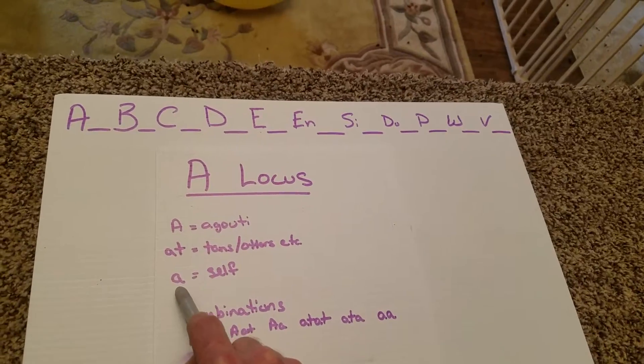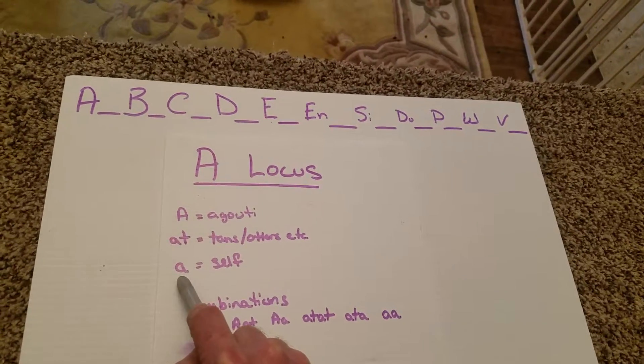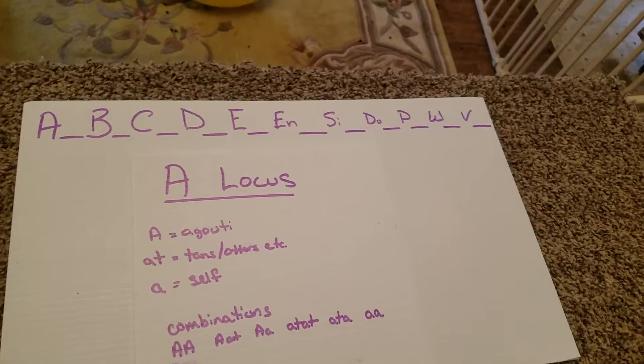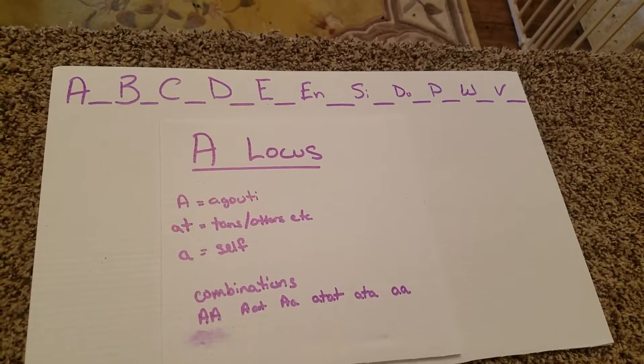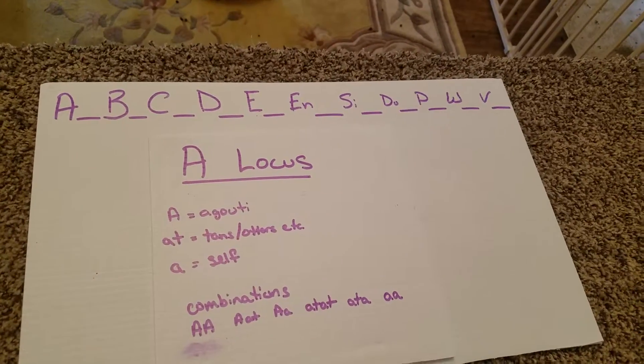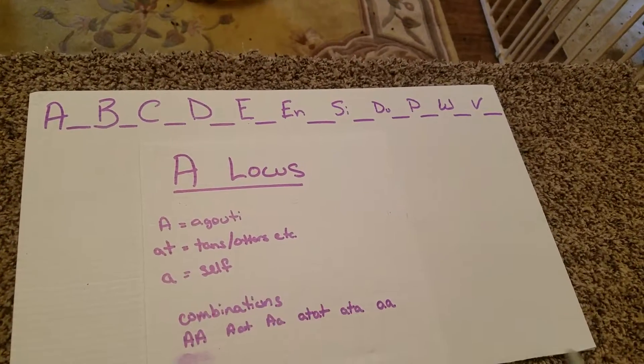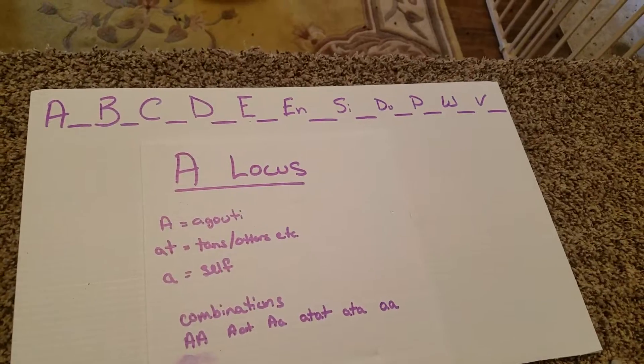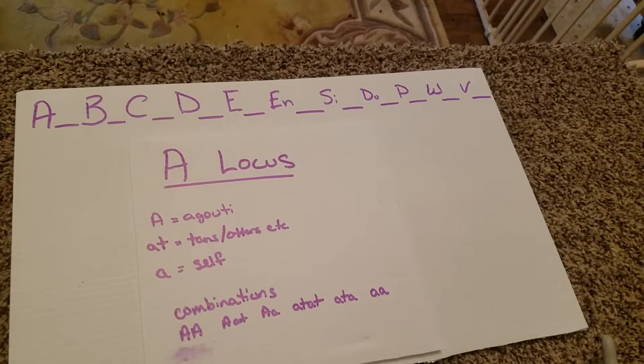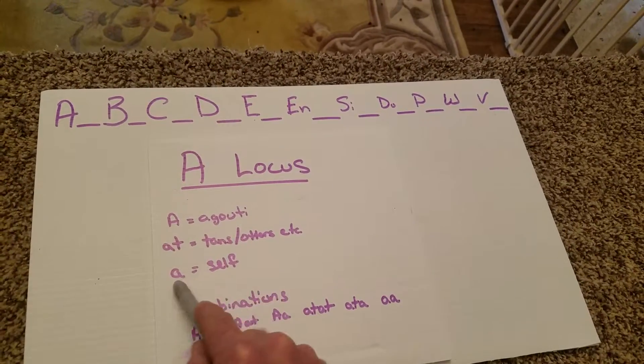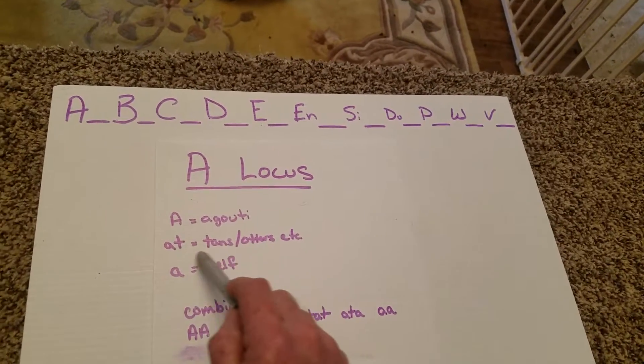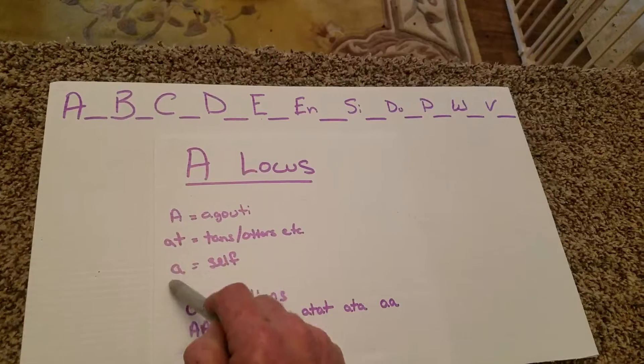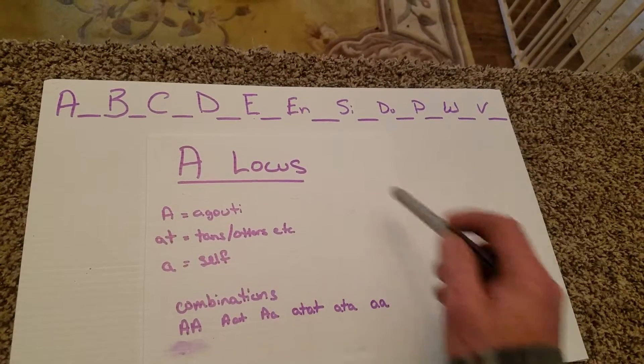And then finally we have one lowercase a which equals self. Now, self-rabbits are solid rabbits generally. They can be broken, but when we're talking about selfs, we're talking about one solid color in general. But it is also found in like sable points. But we're basically talking right now, if we're just about the A locus, we're not talking about any other modifiers up here yet.